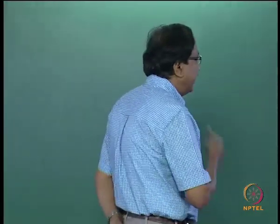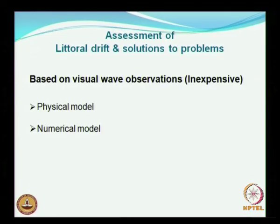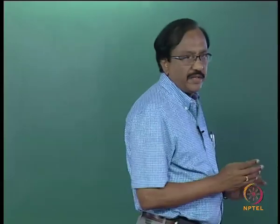We have seen in the earlier lecture about the direction and magnitude of the littoral drift. Although we say that the average littoral drift along the east coast is approximately 1 million cubic meters per year, there is a considerable variation — somewhere as low as 0.7 to 0.8, up to about 1.2 million cubic meters per year. This has been estimated by several agencies within our country, and refinements to this quantity are in progress through direct measurements.